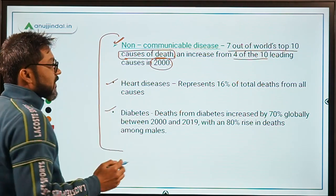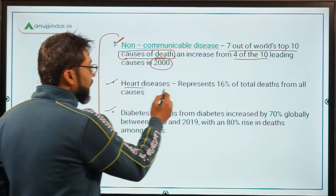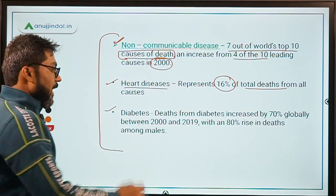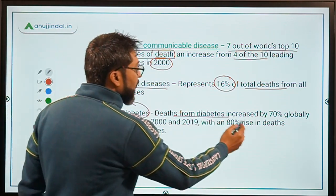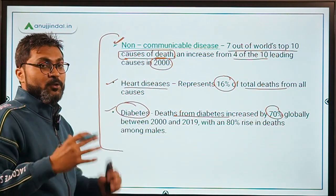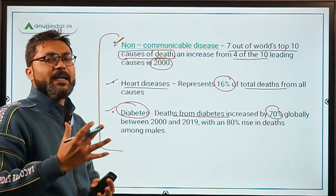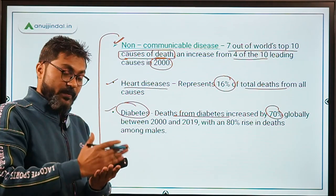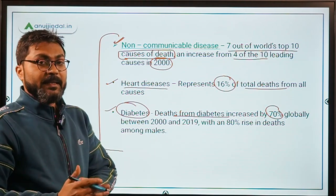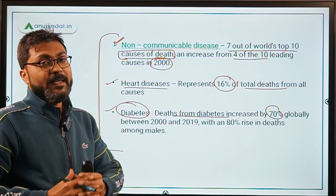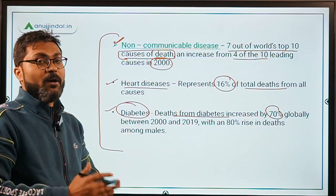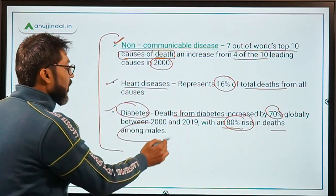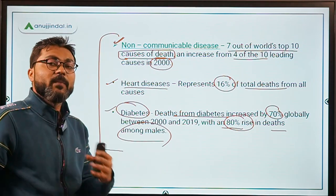Here are some other facts about non-communicable diseases. Heart diseases represent 16% of total deaths across the world. Deaths from diabetes increased by 70% globally when comparing 2000 and 2019, with an 80% rise in deaths among males.